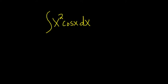In this problem, we're going to integrate x squared times cosine x. We can do this two ways. We can use integration by parts, or we can use tabular integration. Let's go ahead and use tabular because it's a bit easier.